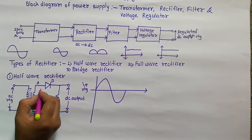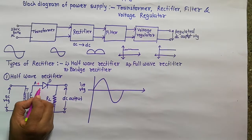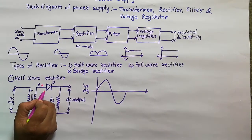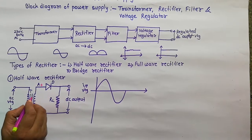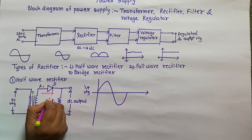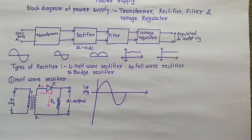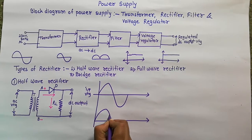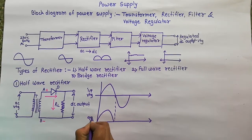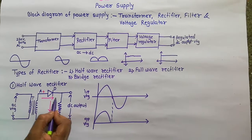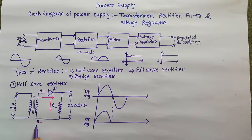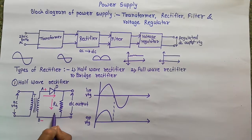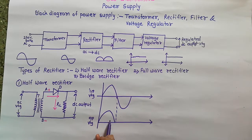During the positive half cycle, end A becomes positive with respect to end B. This makes diode D forward biased — that is, anode is positive and cathode is negative. Diode D conducts and the secondary voltage produces current through diode D and load resistor RL. At the output we get a positive half cycle waveform.